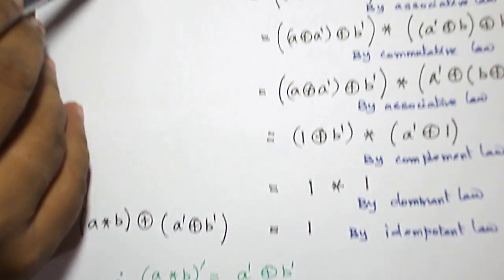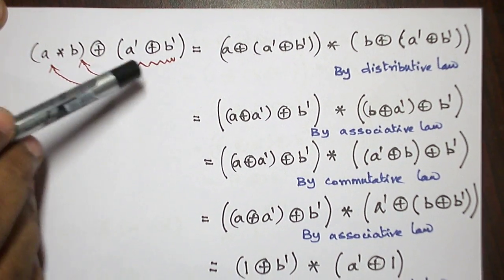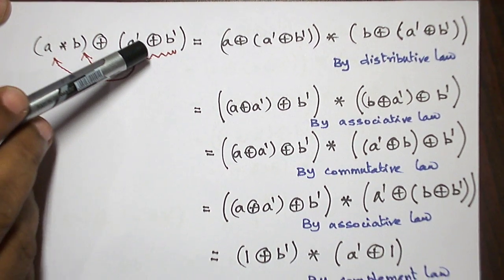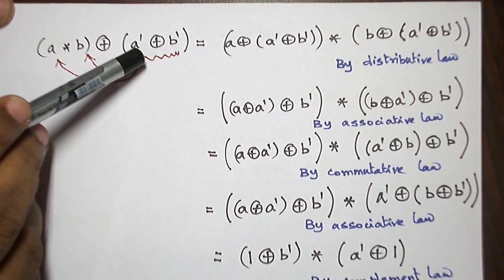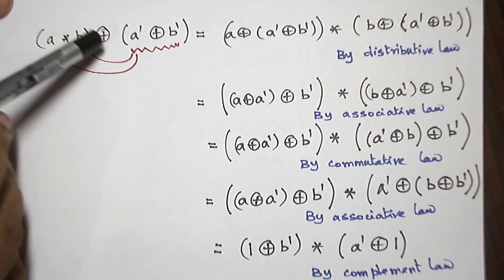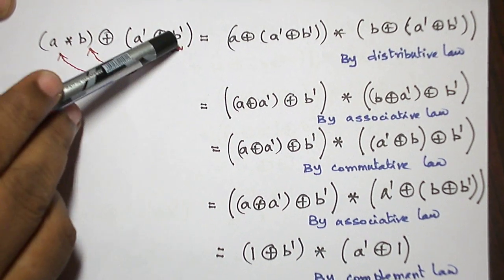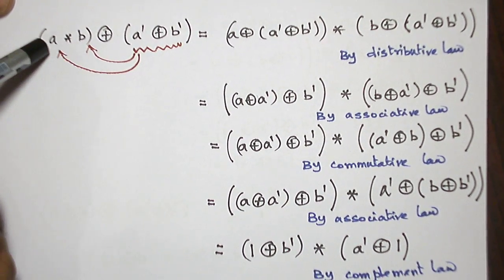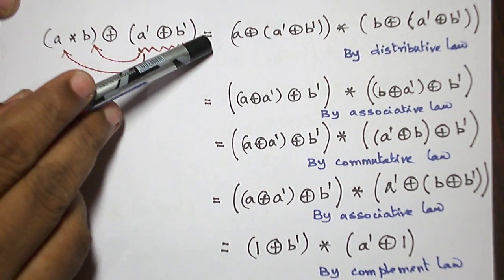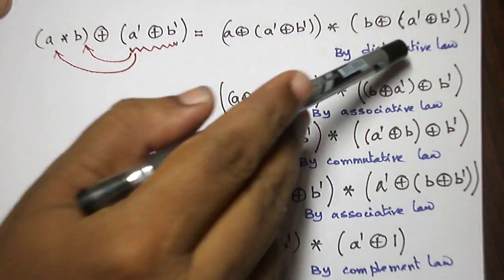Similarly, now take A star B plus (A dash plus B dash). Here also we apply distributive law. Inside the bracket we have one operation and outside the bracket a different operation, so these two are different operations. The entire element A dash plus B dash should be taken as a single element and multiplied with A and B. So: (A plus A dash plus B dash) star (B plus A dash plus B dash).